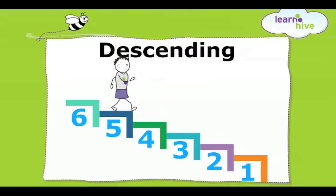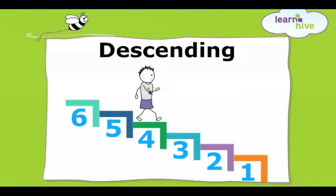He first comes down to step number five. Step five brings him to a lower level than step number six. He continues to walk down to step four. As he comes down the steps, he is said to be descending.